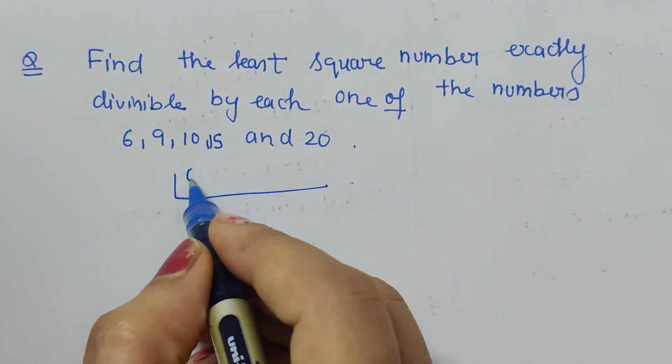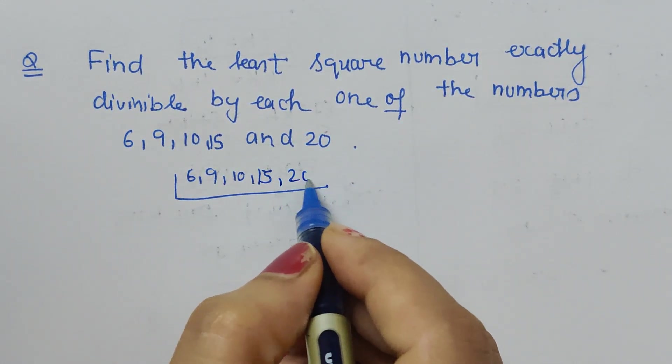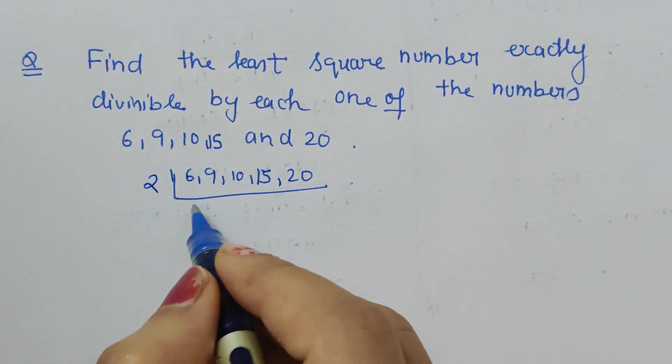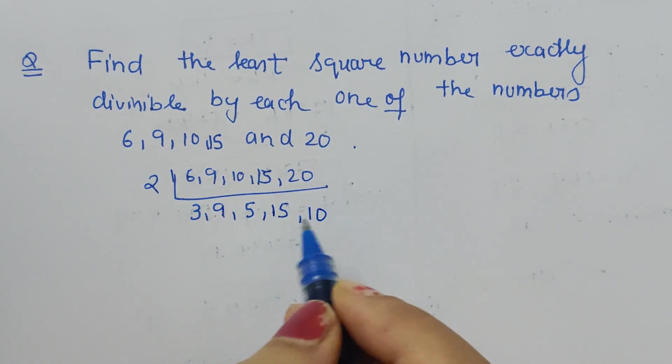So for 6, 9, 10, 15, 20, we are finding the LCM. First we start with 2: 2 goes into 6 giving 3, 9 stays as is, 2 goes into 10 giving 5, 15 stays as is, 2 goes into 20 giving 10.